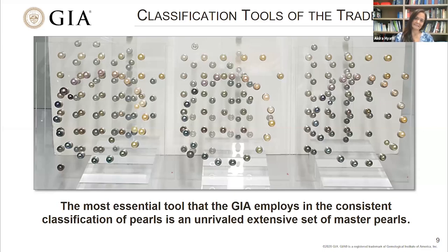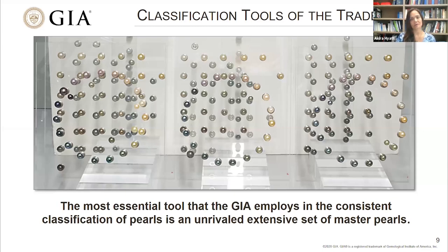The separate pearl-type strand sets guarantee that client pearls are being compared to the same type of master and that inaccurate parameters are not being applied. You cannot take Akoya pearls and grade them using Tahitian strands because, as we said, a number of the parameters are completely different. These master pearls ensure that individual gemologists are consistent with themselves and with each other, and that individual GIA labs are consistent with each other as well — so grades remain the same regardless of where classification is taking place.